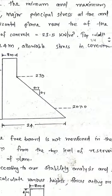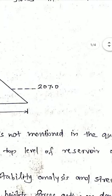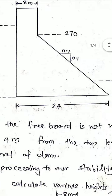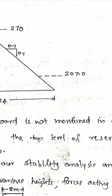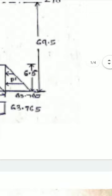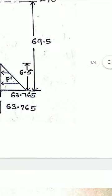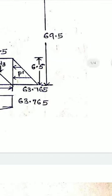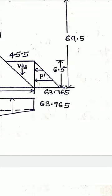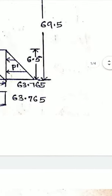The height is 2.7m for the tail water. Taking from the top to the bottom, the difference is the height h'. Then we have γw × h' which is 63.765 kN/m². The intensity of the pressure diagram is on the right side, marked as P'.